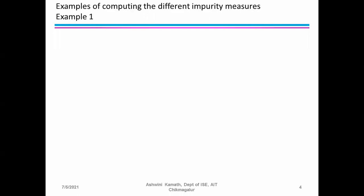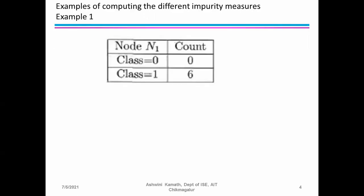Let's discuss an example for computing different impurity measures. Example 1: Consider node N1, where class 0 has a count of 0 and class 1 has a count of 6. The Gini index equals 1 minus the summation for each class of p(i|t) squared. For class 0, it is 0/6 squared, and for class 1, it is 6/6 squared. Total count is 6.